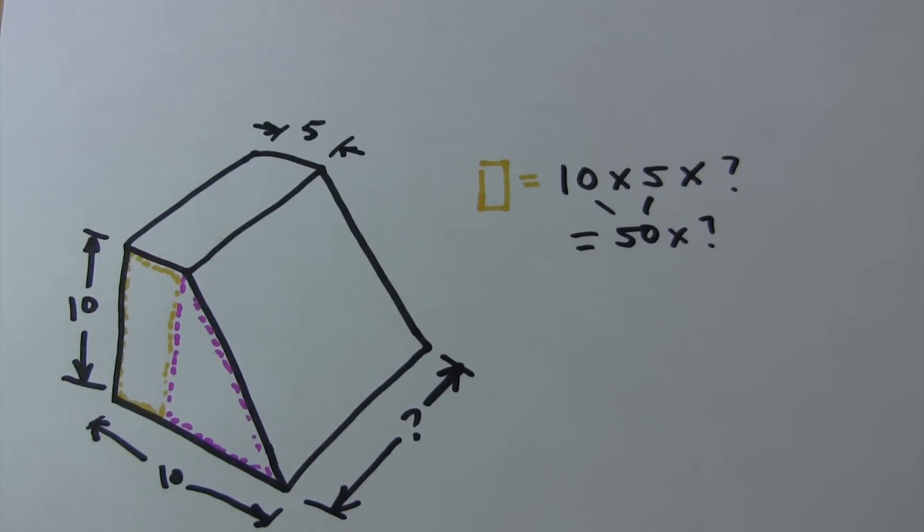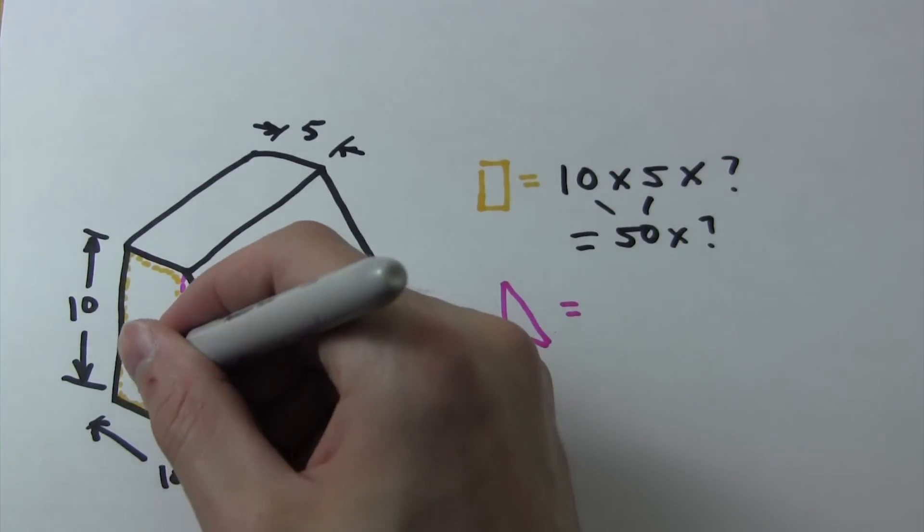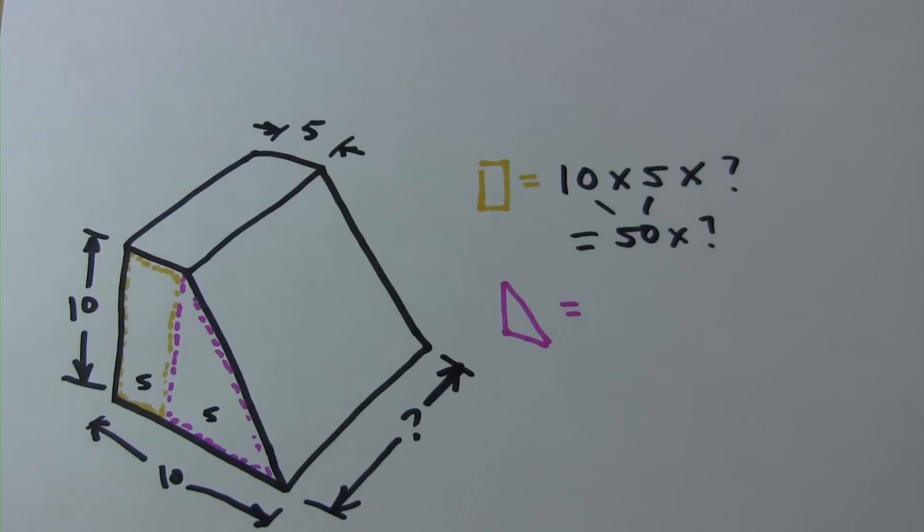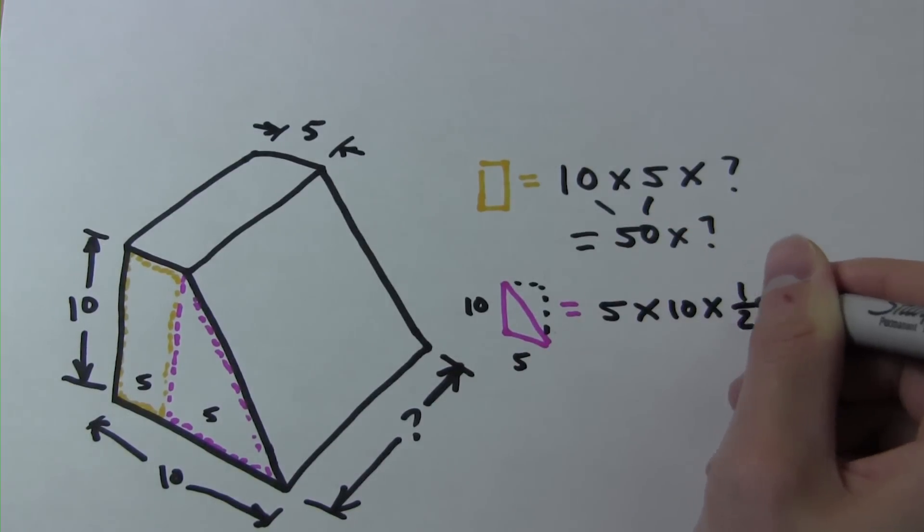We can then determine that the volume of the triangular section is the 5 inches along the bottom, multiplied by the 10 inch height, multiplied by 1 half because it's a triangle, and then multiplied by the variable depth.